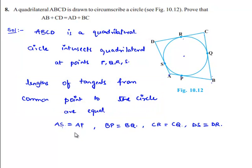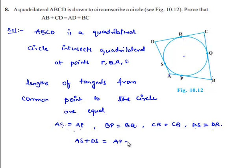Now let us add equation 1 (AS = AP) and equation 4 (DS = DR). Then we get AS plus DS equals AP plus DR, which implies AS plus DS is AD from the figure. Therefore, AD is equal to AP plus DR.